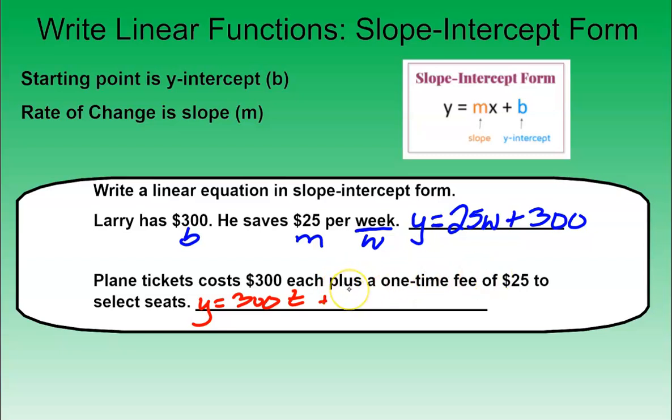Plus a one-time fee of $25. So no matter what, you have to pay $25 to select your seats. So that would be $25. So my equation would be 300t plus 25.